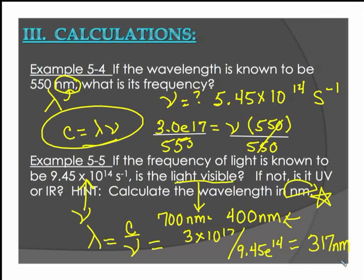Now the question asks if it's not visible is it ultraviolet or IR? Now it doesn't fall between 700 and 400. Instead it falls on this end of our visible light. And that's why I said you had to know that that high energy end is ultraviolet. So the answer would be that this is likely in the ultraviolet range of light.